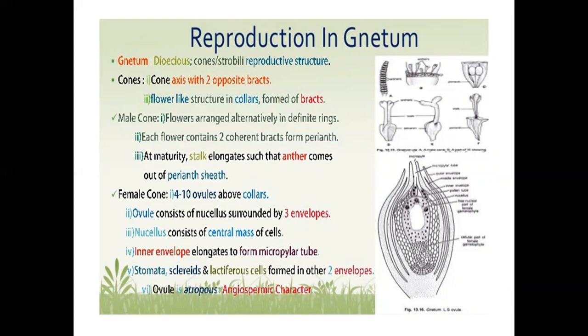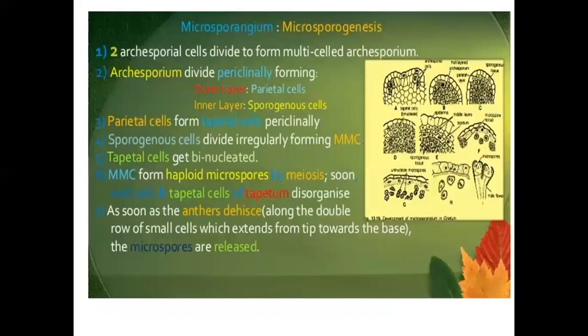Ovules are anatropous, a gymnosperm character. Microsporangium and microsporogenesis: two archesporial cells divide to form a multi-cell archesporium. Archesporium divides periclinally forming an outer layer of parietal cells and an inner layer of sporogenous cells. Parietal cells form tapetal cells periclinally. Sporogenous cells divide irregularly forming microspore mother cells. Tapetal cells become binucleate. Microspore mother cells form tetrads of microspores by meiosis, and tapetum disorganizes. The anther dehisces along a double row of small cells extending from the apex towards the base, releasing the microspores.